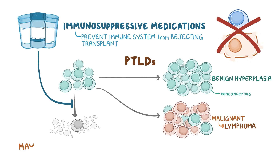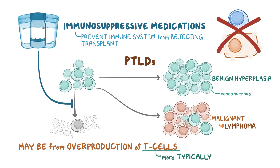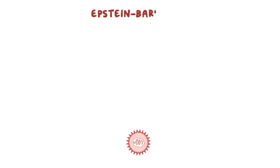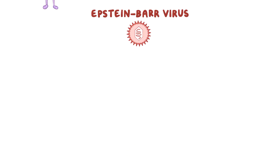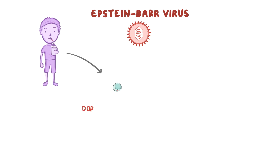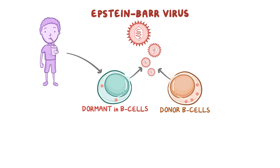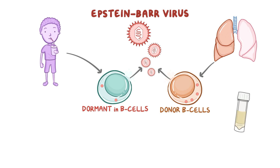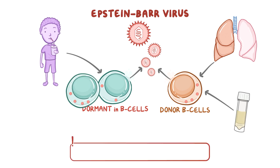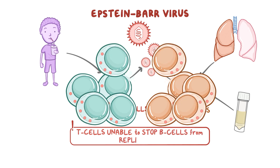While PTLD may result from the overproduction of T-cells, it is more typically associated with the overproduction of B-cells. One cause of PTLD is Epstein-Barr virus, which is contracted early in life by most people through contact with infected saliva. It lies dormant in B-cells and can reactivate either inside the recipient's B-cells or from donor B-cells that catch a ride inside solid organs or stem cell transplant vials. Because of the immunosuppressive medications, T-cells are unable to stop B-cells from replicating.